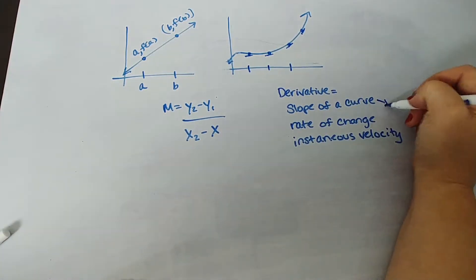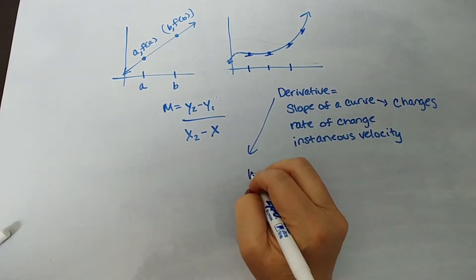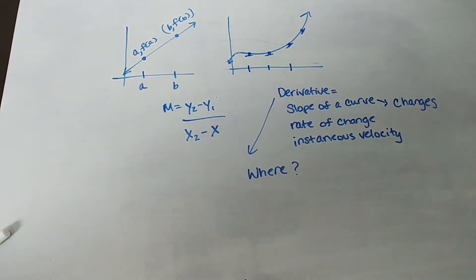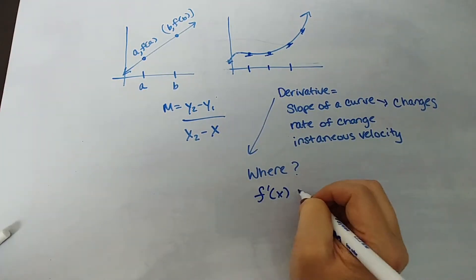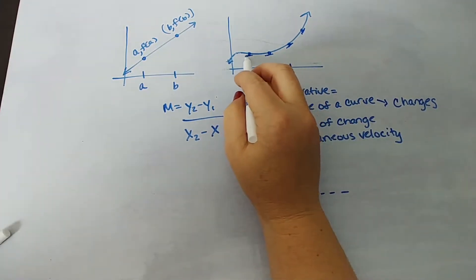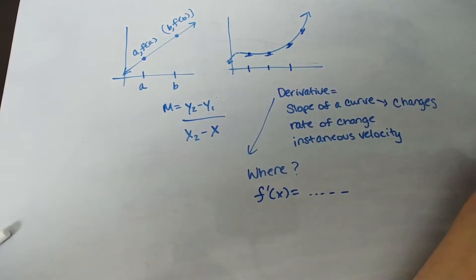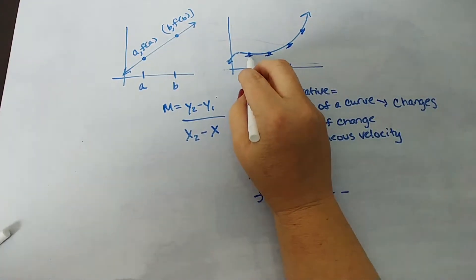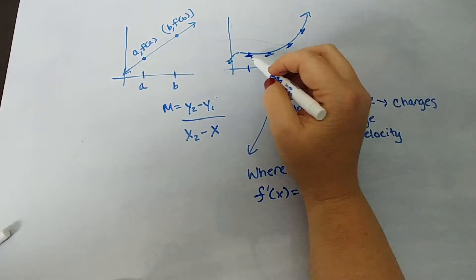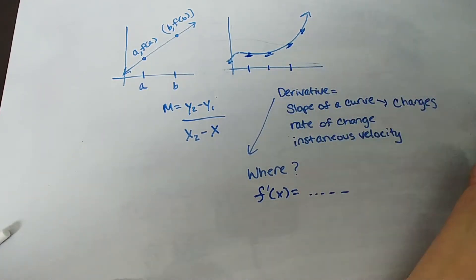What do we know about the slope of a curve? It's changing. So if you want the slope, it wants to know where — where do you want to know how fast it's changing? When you get a derivative, you get a function: f prime of x equals something in terms of x, so you have to plug in and find that. These little lines I draw are sometimes called tangent lines, used to estimate the slope, or how fast it's changing, or the derivative.